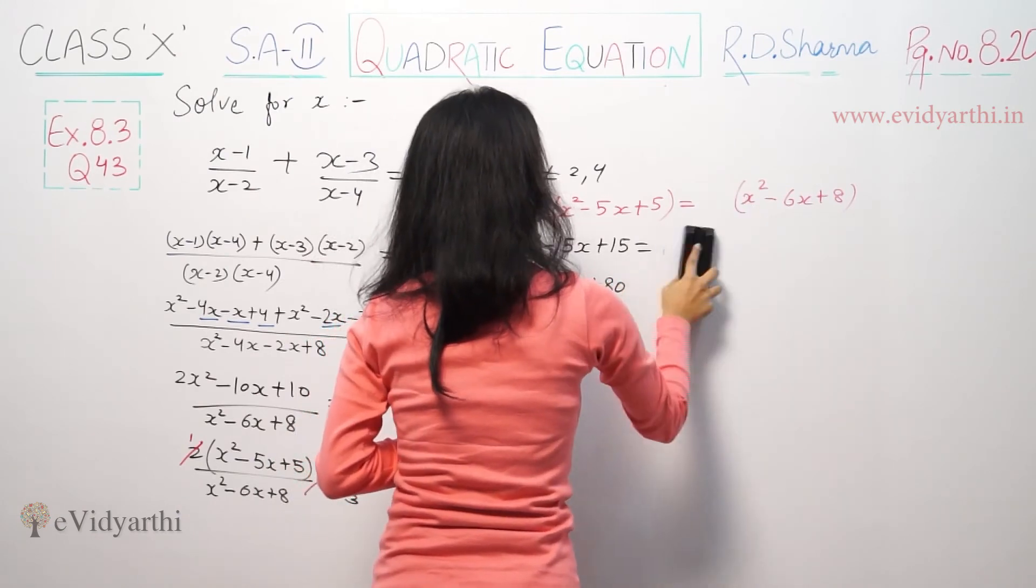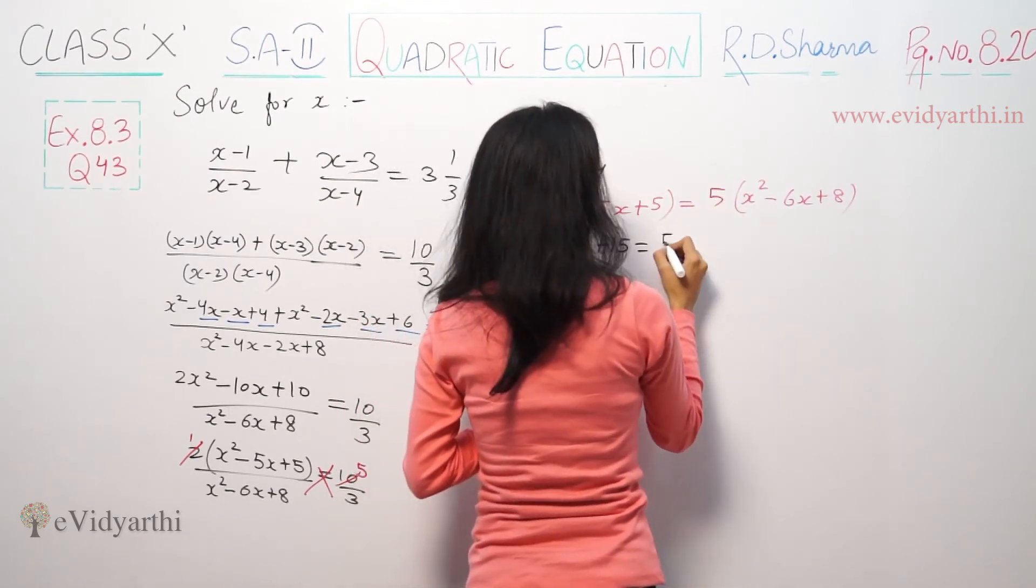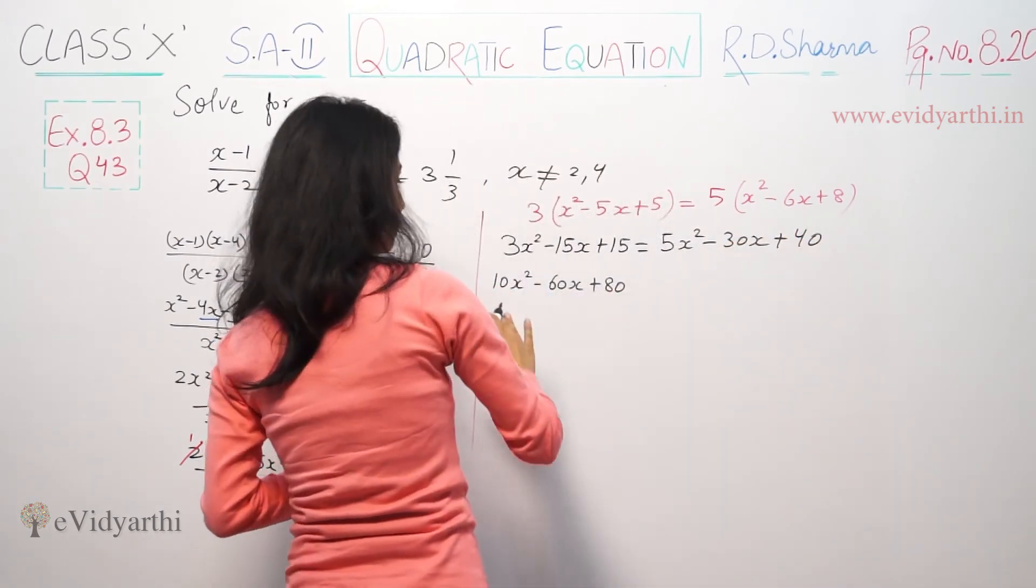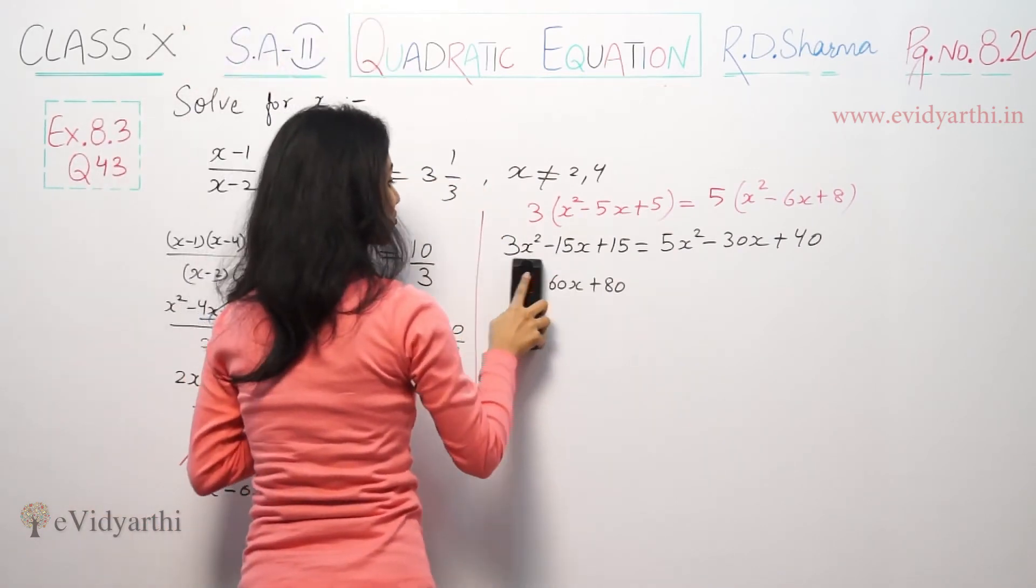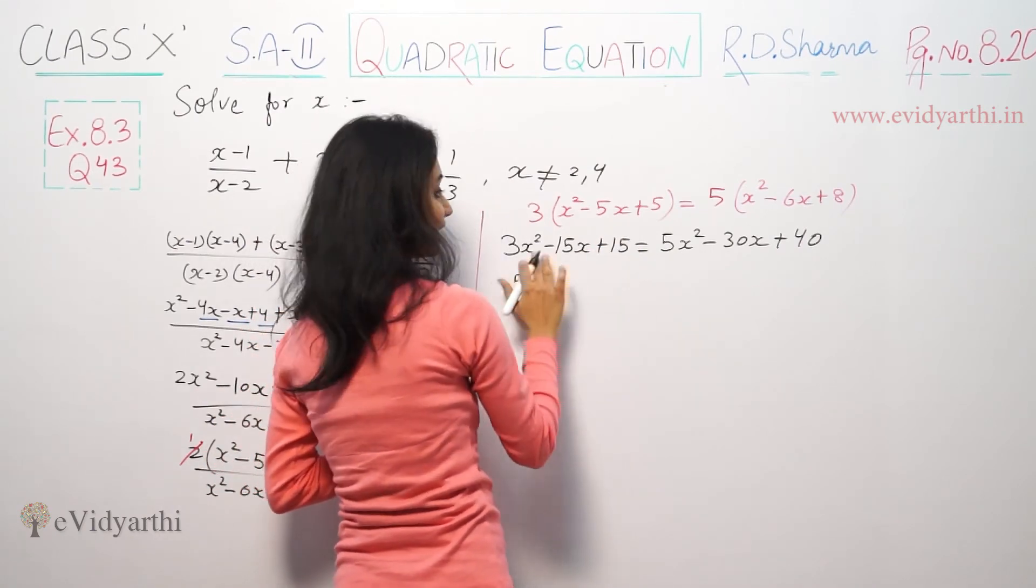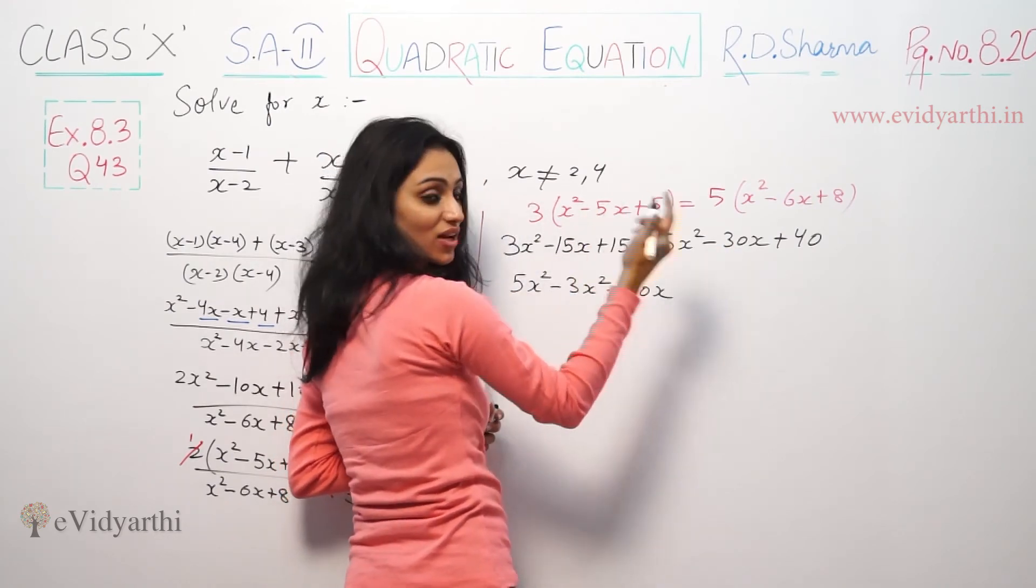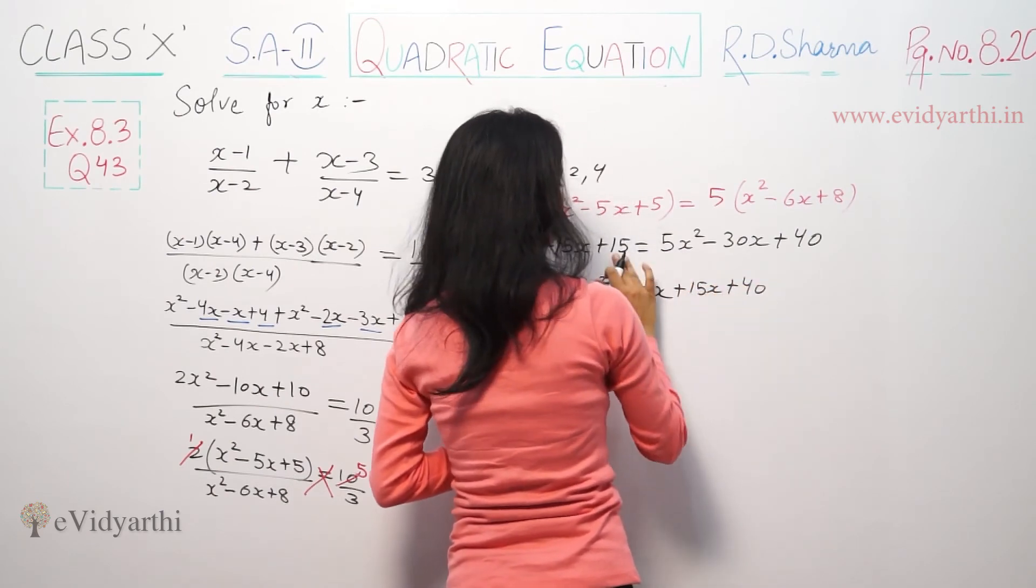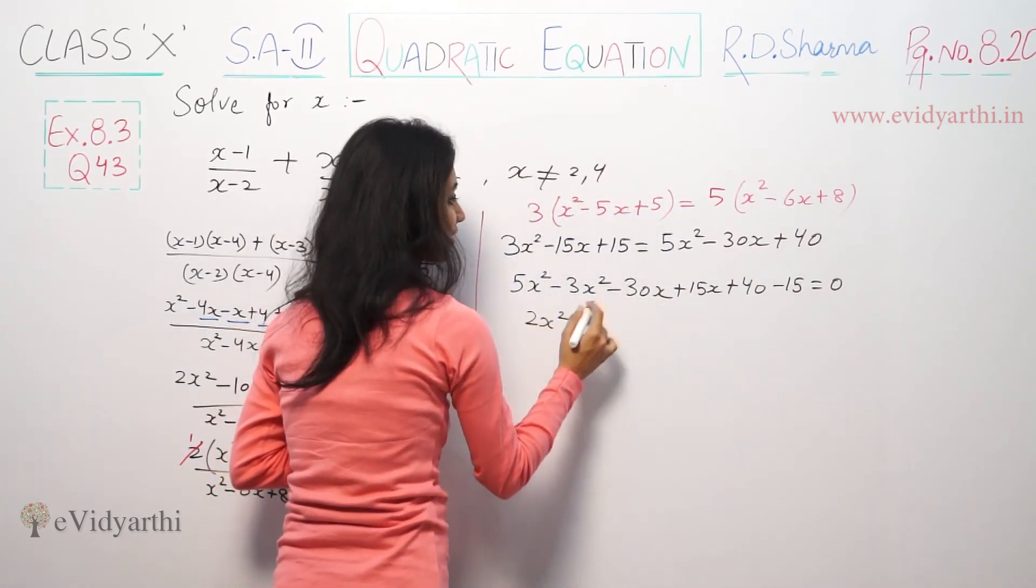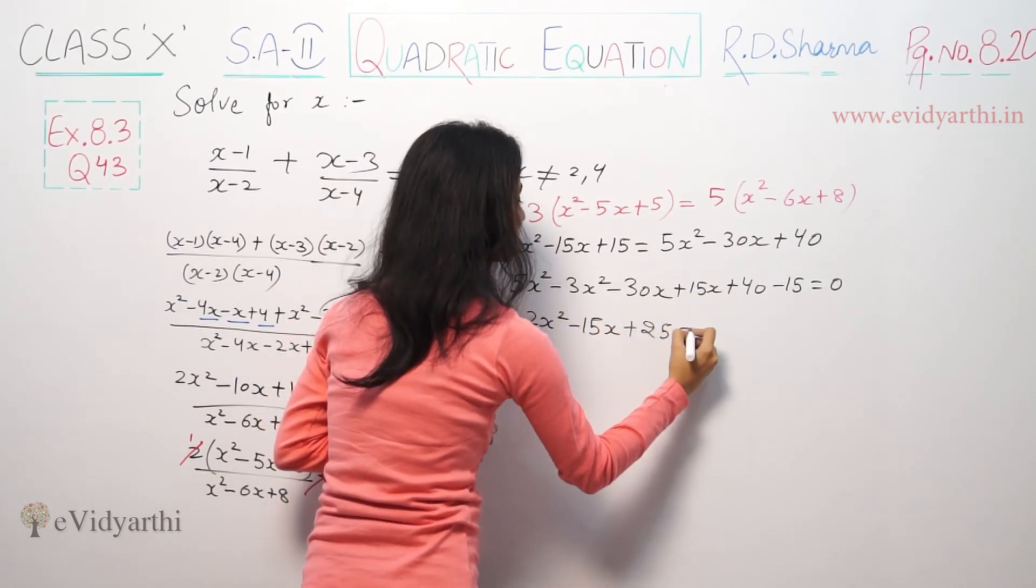Moving terms: 5x² - 30x + 40 - 3x² + 15x - 15 = 0. So we get 2x² - 15x + 25 = 0.